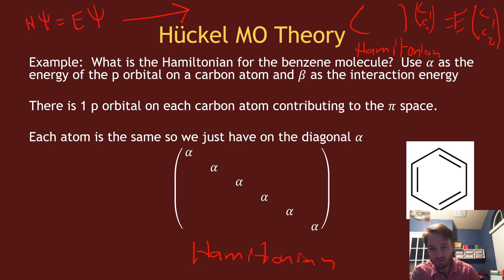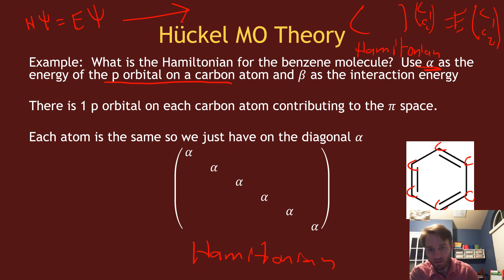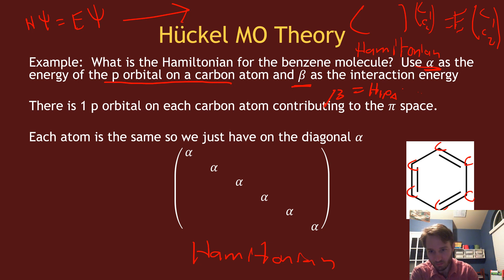Since in benzene I'm just looking at carbons in the pi space — all I care about is carbons bonded to carbons — I'm going to use the value alpha. I can call it anything, but alpha represents the p orbital energy on a carbon atom. Then I'm going to call beta the interaction energy between nearest neighbor atoms — that is, the matrix element between the p orbital on atom A and atom B.